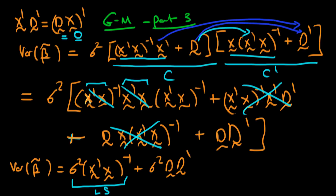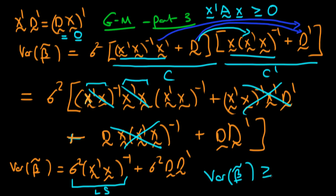Well we can make some conclusions about what this second term looks like, because any matrix times the transpose of that matrix turns out to be a positive semi-definite matrix. What does a positive semi-definite matrix mean? Well if I have any vector x times a positive semi-definite matrix A times x, that scalar product is always greater than or equal to 0. Because D times D transposed is a positive semi-definite matrix, we can think about this second term as being the analog of a scalar number which is greater than or equal to 0. So we conclude that the variance of beta tilde is greater than or equal to the variance of beta hat least squares, because this is just what we have from least squares plus some non-negative second term.